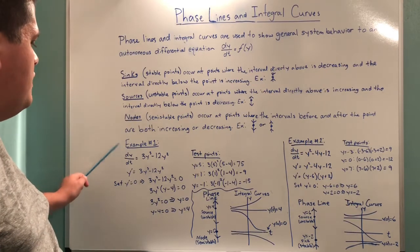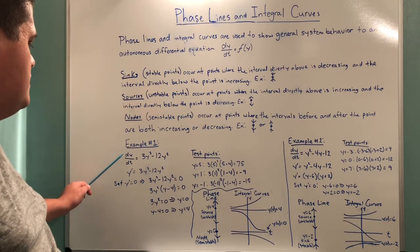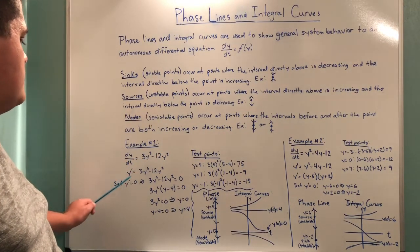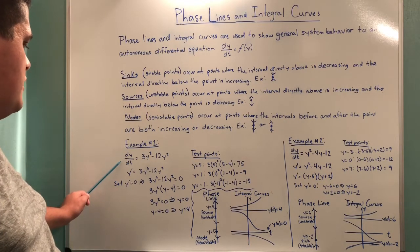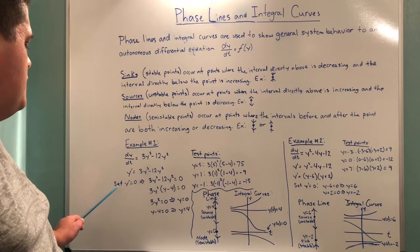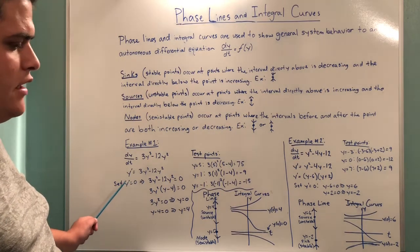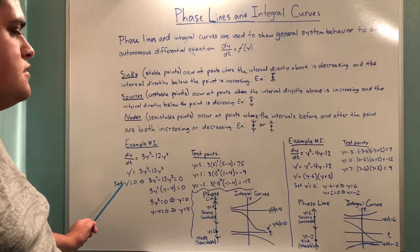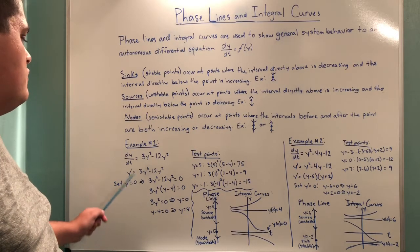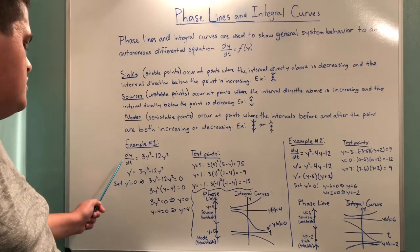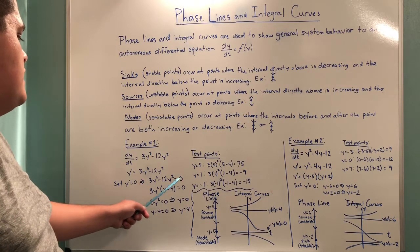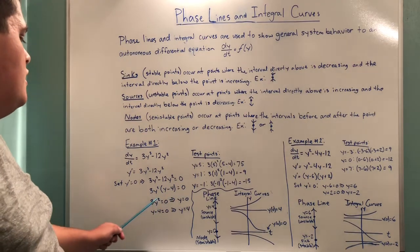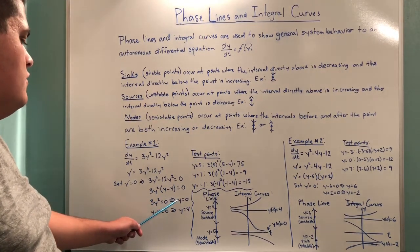For our first example we have the first order differential equation dy/dt equal to 3y cubed minus 12y squared, which we can write as y prime. To find the critical points we set the equation equal to zero, giving us 3y squared times (y minus 4) equal to zero. We get two points: y equal to zero and y equal to four.